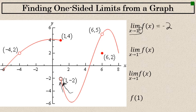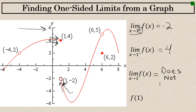The limit as x approaches 1 from the left — when evaluating this, I'll ignore what the graph is doing to the right of x equals 1 and only concentrate on what the graph is doing from the left. From the left, it's approaching a point that would have a y value of 4. So the limit as x approaches 1 from the left equals 4. The two-sided limit as x approaches 1 of f of x does not exist, because from the right it's approaching negative 2 and from the left it's approaching 4. Because the graph is not approaching the same point from both sides, the limit does not exist. By definition, if the limit from the right is different from the limit from the left, the two-sided limit does not exist.